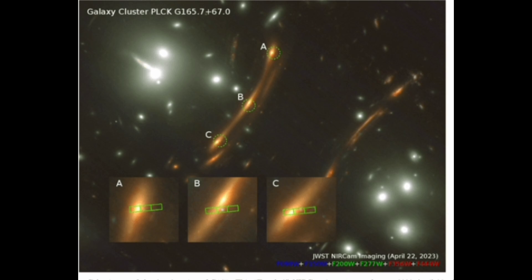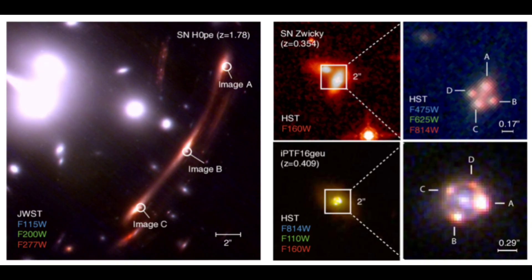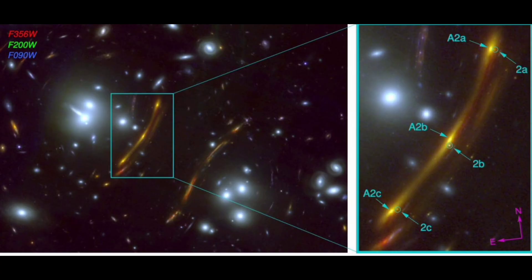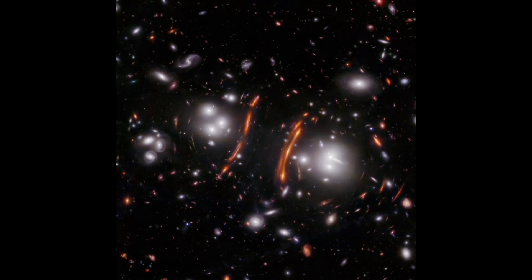The new discovery by James Webb could be a significant step towards resolving this tension. The research team named this particular supernova SNH0PE, as it is shedding light on a better understanding of the universe's expansion rate. According to the team's measurements, the Hubble constant was found to be 75.4. While this value is consistent with the results of some previous studies, further observations and research are needed to increase the accuracy of this value.